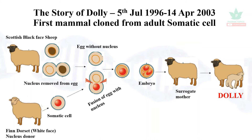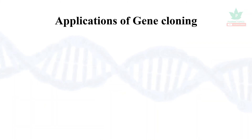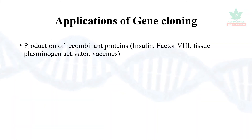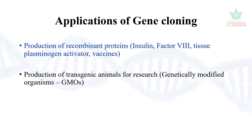The applications of gene cloning include the production of recombinant proteins such as insulin, tissue plasminogen activator, and vaccines. It also includes the production of genetically modified organisms such as mice and rats used in laboratory research.